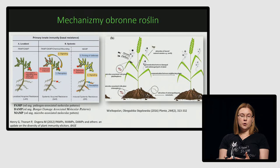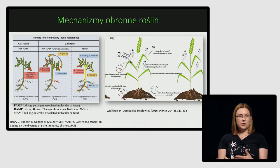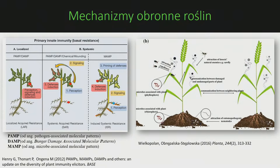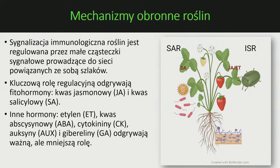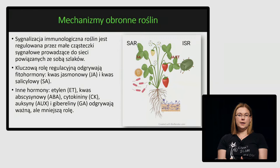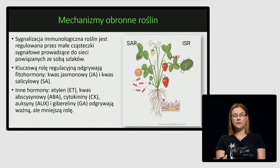Rośliny mogą bronić się nie tylko w miejscu wniknięcia patogenu, ale i w dalszych częściach – jest to tak zwana odpowiedź systemiczna. Sygnalizują między częściami rośliny, a nawet ostrzegają sąsiadujące rośliny o zagrożeniu, żeby zaczęły syntetyzować czynniki obronne. Mechanizmy obronne są powiązane z syntezą małych cząsteczek sygnałowych, tzw. fitohormonów – kwasu salicylowego, kwasu jasmonowego oraz etylenu.